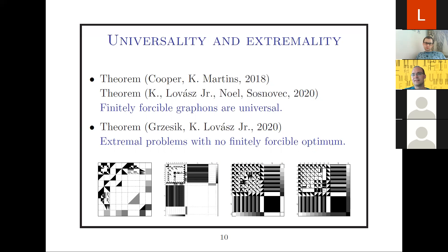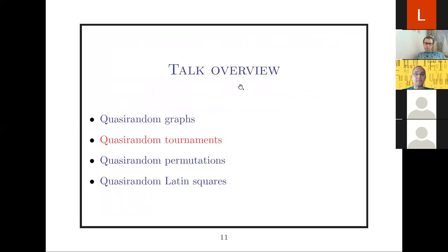There don't seem to be any questions, so the rest of the talk will be more about quasi-randomness proper. I won't be making many detours to graph limits or permutation limits. I was thinking whether to include proofs, but I decided I will discuss connected results without many proofs — there will be one sketch of proof. Let me briefly mention tournaments.